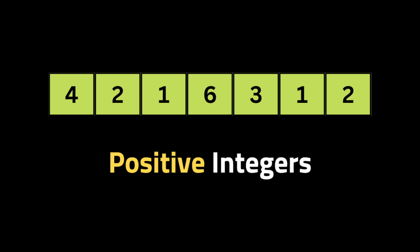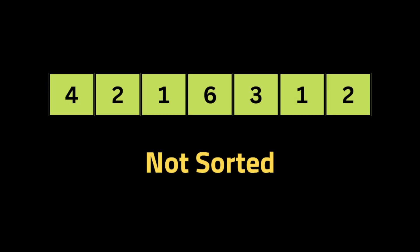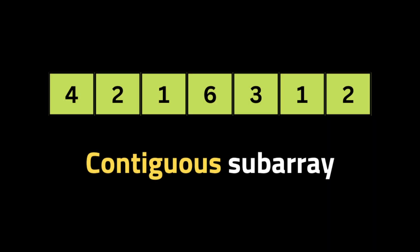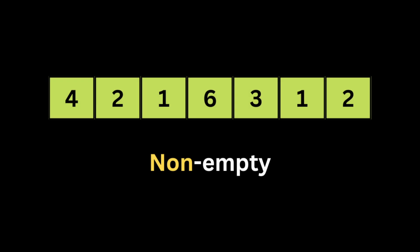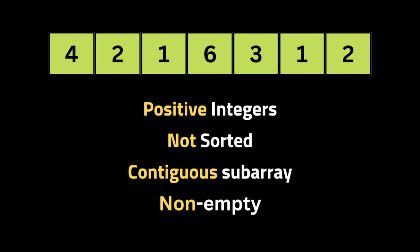The second question is: do we have a sorted array or not? In this example we don't have a sorted array. The third question is whether the subarray is a contiguous sequence of elements — here it is. The last question is what if the input is empty; the interviewer may say the subarray must have at least one element.